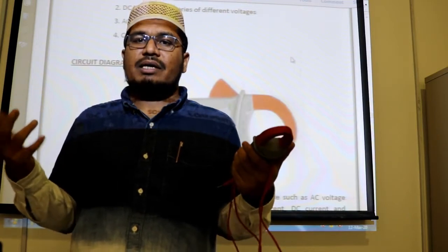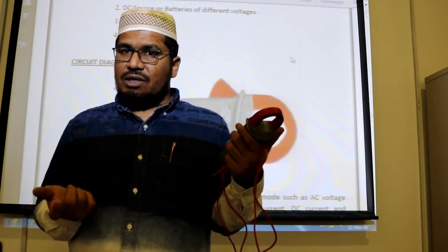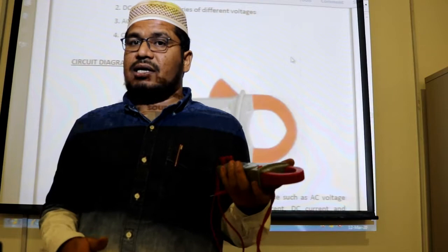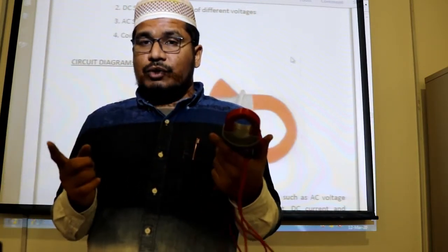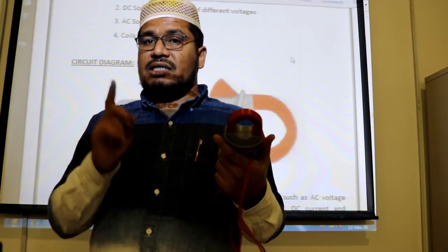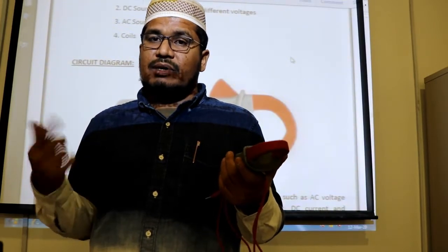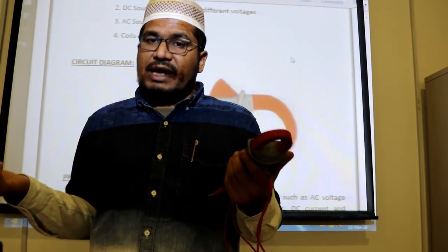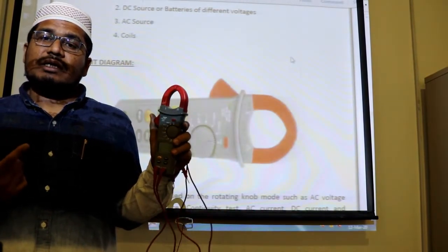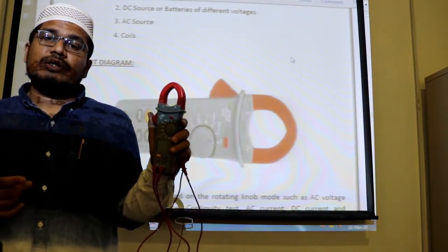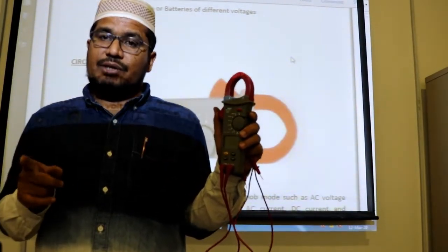That is we are connecting voltmeter in parallel to any element, so that we can measure the voltage. But for the current it is not the case, the case is different, that is we have to open that circuit, that is the ammeter should be connected in series where current has to be measured for that component, for that item or for that measuring place. So this clamp multimeter will solve that switching off and switching on the power supply problem or interrupting the power of a particular circuit problem.